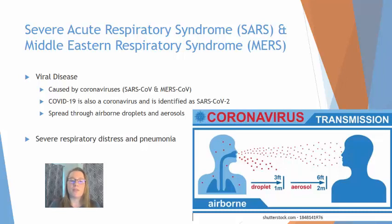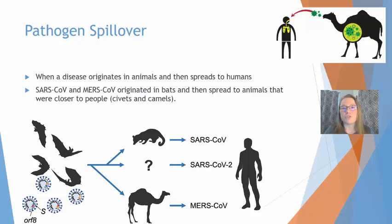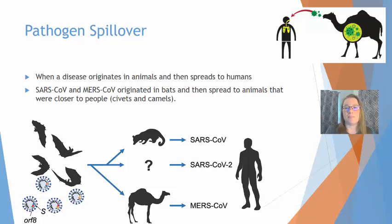All three of those diseases are spread through airborne droplets or aerosols and cause severe respiratory distress and pneumonia. These coronavirus diseases are the result of pathogen spillover — when a disease that originates in animals spreads to humans. All of these SARS viruses originated in bats, then spread to an intermediate host in closer contact with humans. With MERS specifically, the virus went from bats into camels, and it was the mucus and saliva from camels that made the leap into humans.